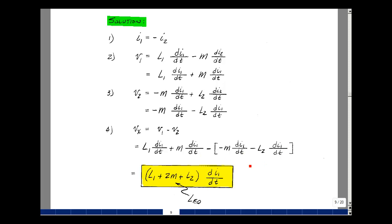Di1/dt is common to each term, so let's pull it out, and I have L1, M, another M, and then a plus L2. So what I've got then is V sub x is equal to the quantity L1 plus 2M plus L2 Di1/dt.